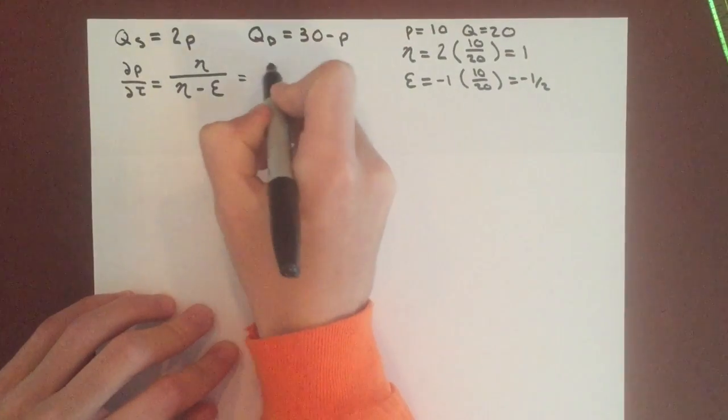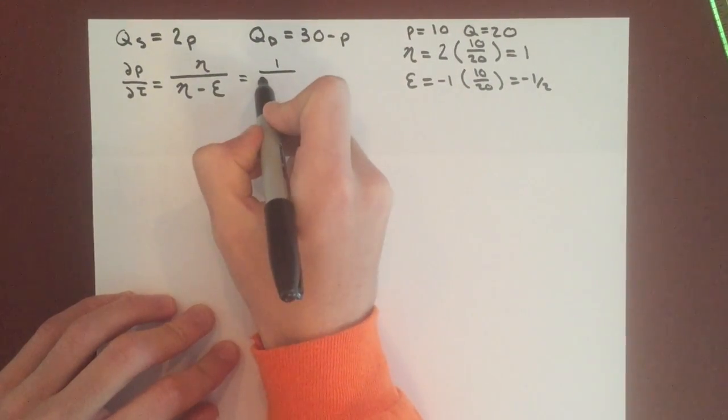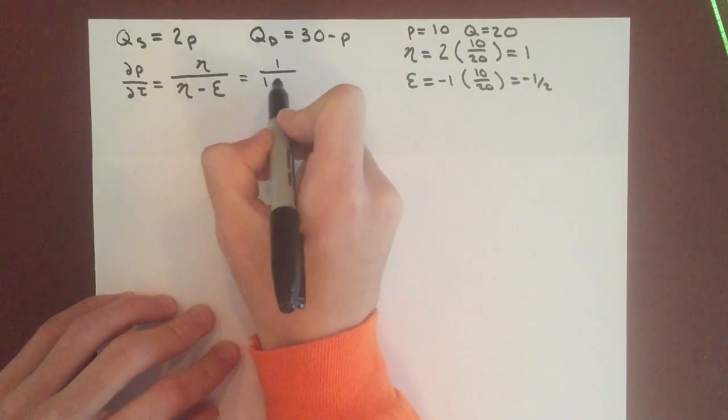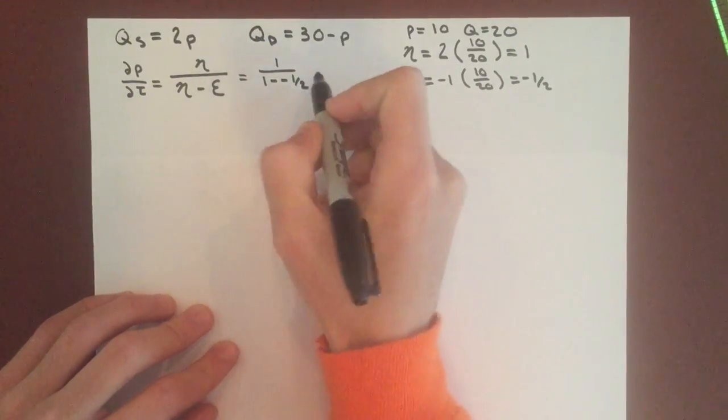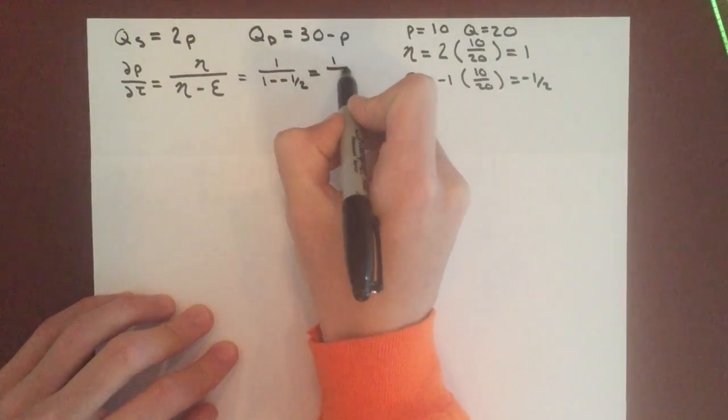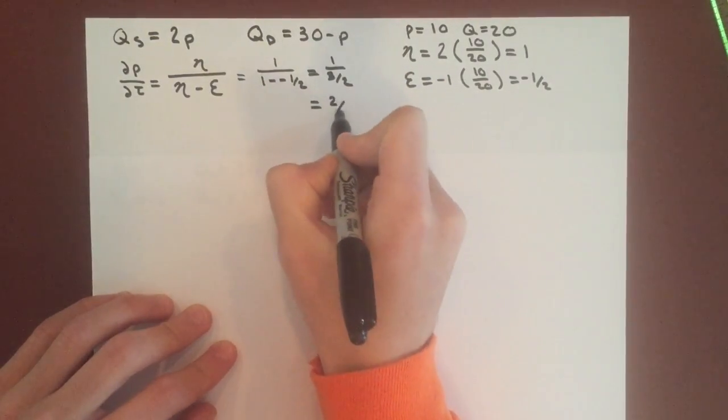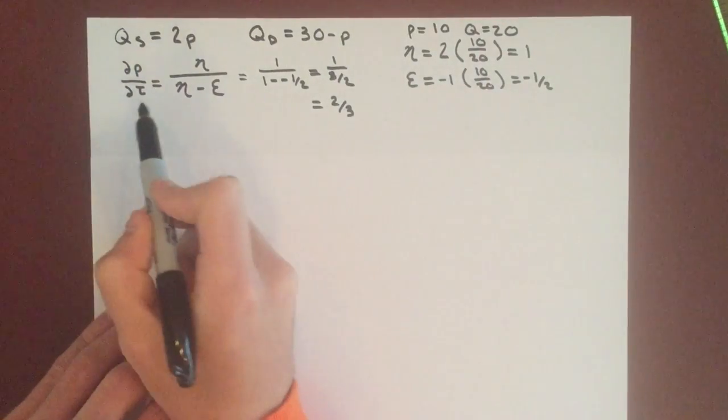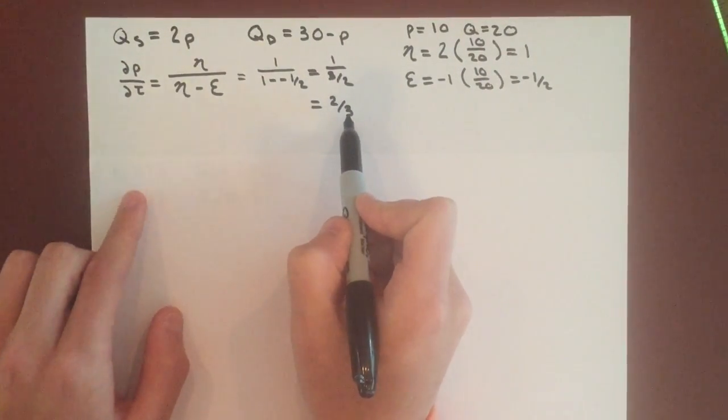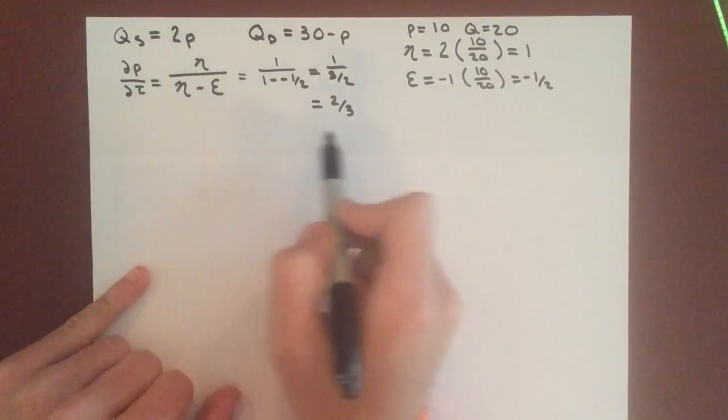Plugging these into our equation, we have 1 over 1 minus negative 1/2. These change to plus, giving us 1 over 3/2, which equals 2/3. This means that consumers will pay 2/3 of any tax instituted.